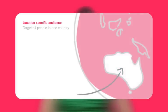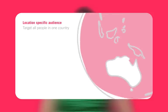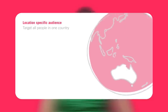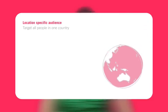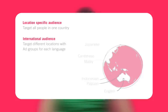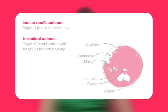Target your campaign to a country only if your audience includes all the people in that country. If you have a global business, target all countries and territories. If you target an international audience, create each ad group in one language. This helps ensure that the ad appears in the same language in which the keyword was entered.